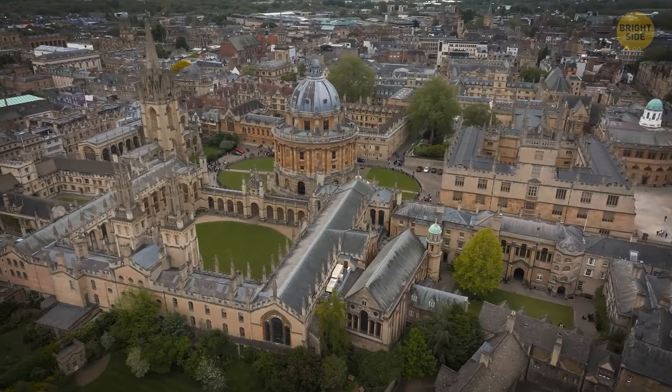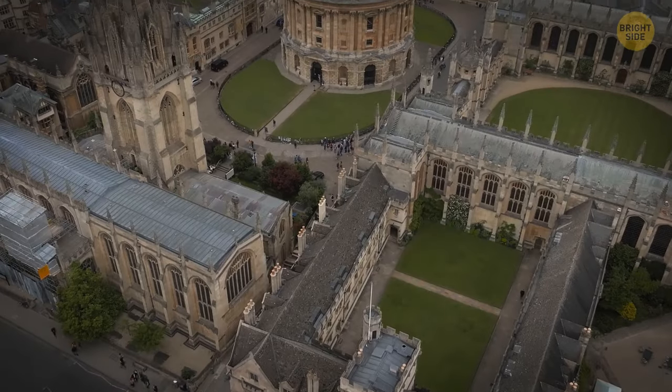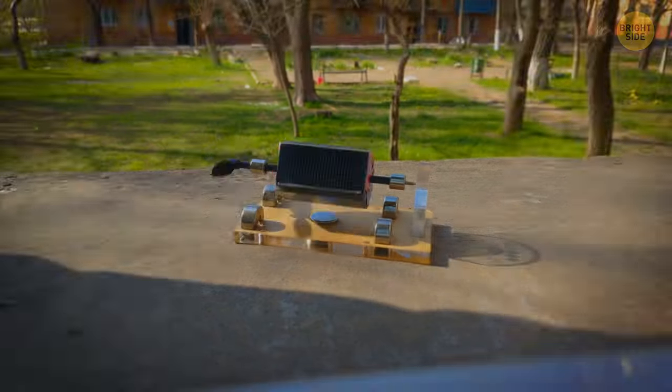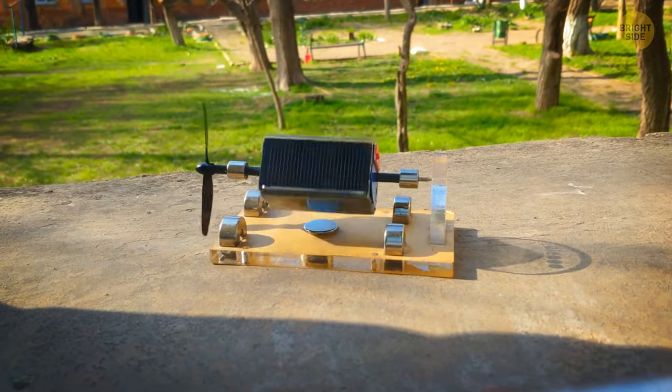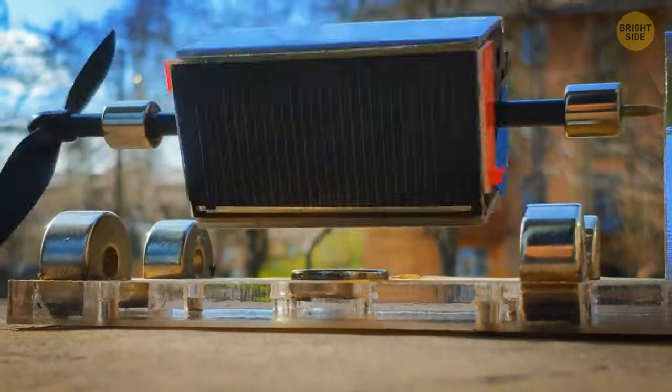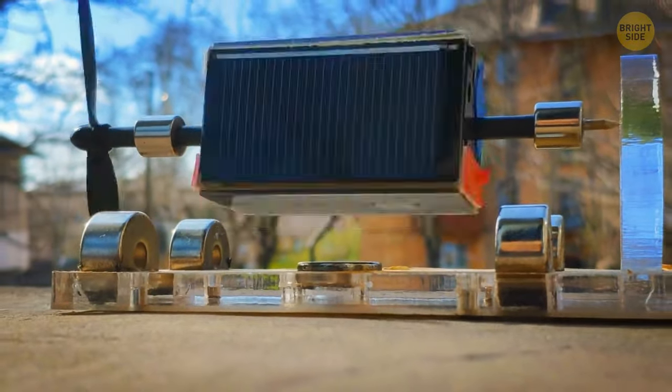For now, the mystery around the Oxford Electric Bell remains. At least one thing is clear. Every single attempt at building a perpetuum mobile is destined to fail because they violate the laws of physics.